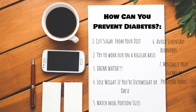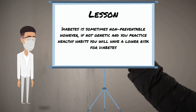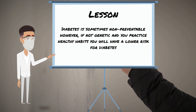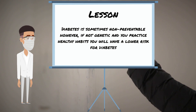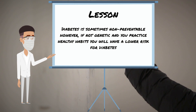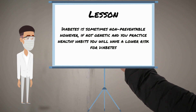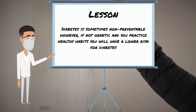How can you prevent diabetes? One: cut sugar from your diet. Two: try to work out on a regular basis. Three: drink water. Four: lose weight if you're overweight or obese. Five: watch meal portion sizes. Six: avoid sedentary behaviors. Seven: minimize your intake of processed foods.